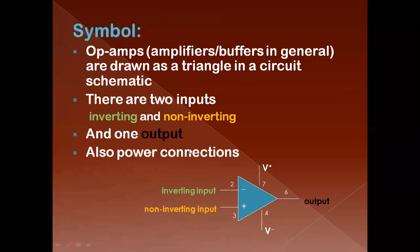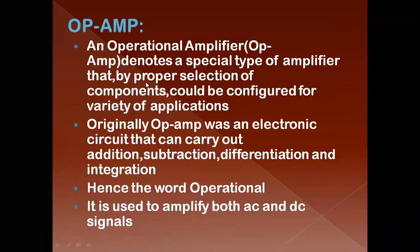The op-amp is drawn as a triangle in circuit schematics. There are two inputs: one is the inverting input and the second is the non-inverting input. There is one output and two power supply connections — one positive power supply and one negative power supply. The op-amp is a special type of amplifier designed to perform mathematical operations and can amplify both AC and DC signals.